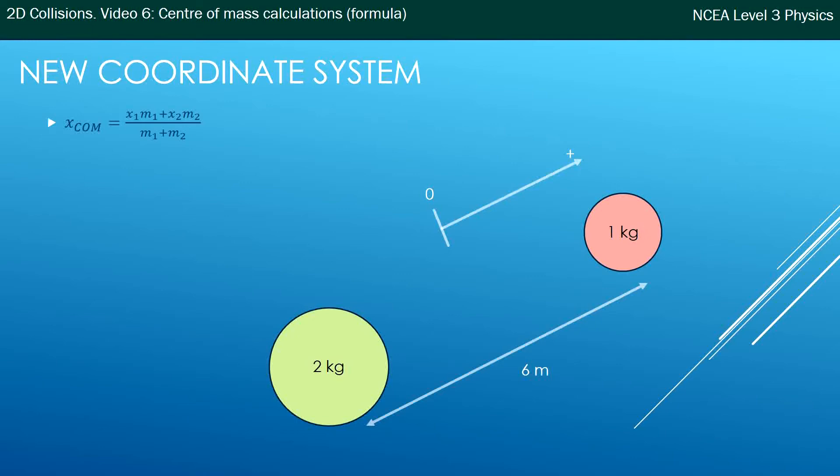So that means the 2 kg ball is sitting in the negative direction and that's really important because if you don't add the negative in when choosing the origin to be in the middle, your calculations are going to be really off.